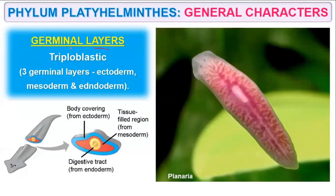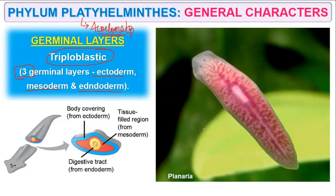Platyhelminthus are triploblastic organisms — they have three germinal layers: outer ectoderm, mesoderm, and endoderm. But these Platyhelminthus are acoelomate — they do not have the presence of a coelom. So a frequently asked exam question is: name the triploblastic acoelomate phylum. The answer is Phylum Platyhelminthus.